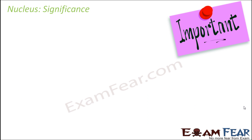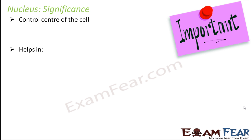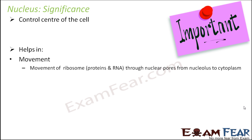Now let us quickly see the significance of the nucleus. We saw that the nucleus is very important for cell division and for inheritance. So the nucleus is the control center of the cell. It helps in the movement of substances like ribosomes, proteins, and RNA through nuclear pores from the nucleolus to the cytoplasm — this movement of substances is very, very important.